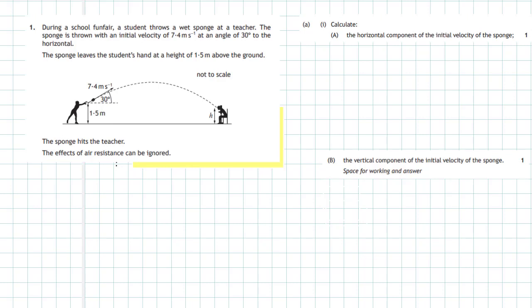2018 Higher Physics section 2, question 1 - a projectile question. During a school funfair, a student throws a wet sponge at the teacher. The sponge is thrown with an initial velocity of 7.4 m/s at an angle of 30 degrees to the horizontal. The sponge leaves the student's hand at a height of 1.5 metres above the ground, as shown in the diagram.